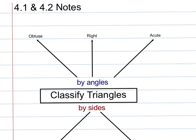If we classify triangles by their angles, there are three ways to do that. An obtuse triangle is one in which one of the angles is obtuse—in other words, greater than 90 degrees but less than 180 degrees.